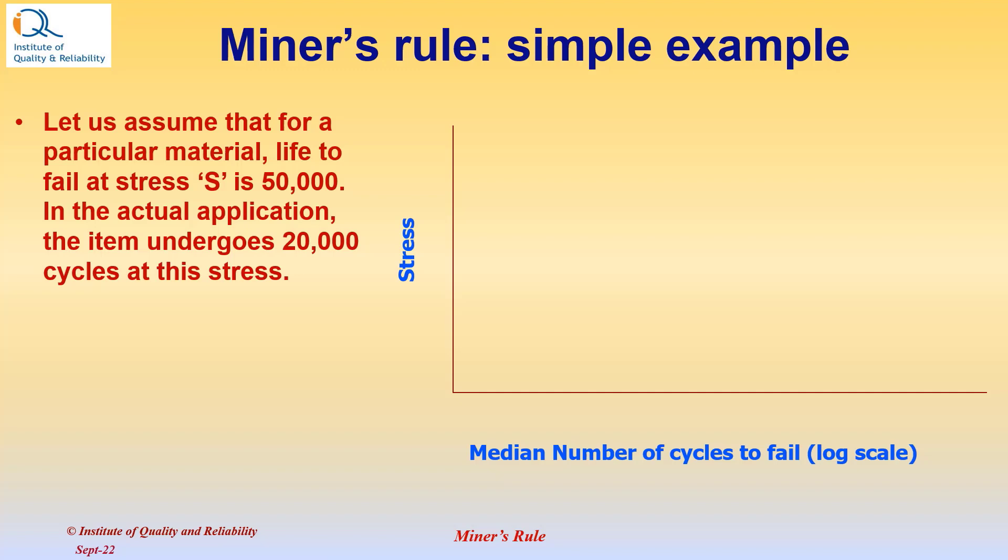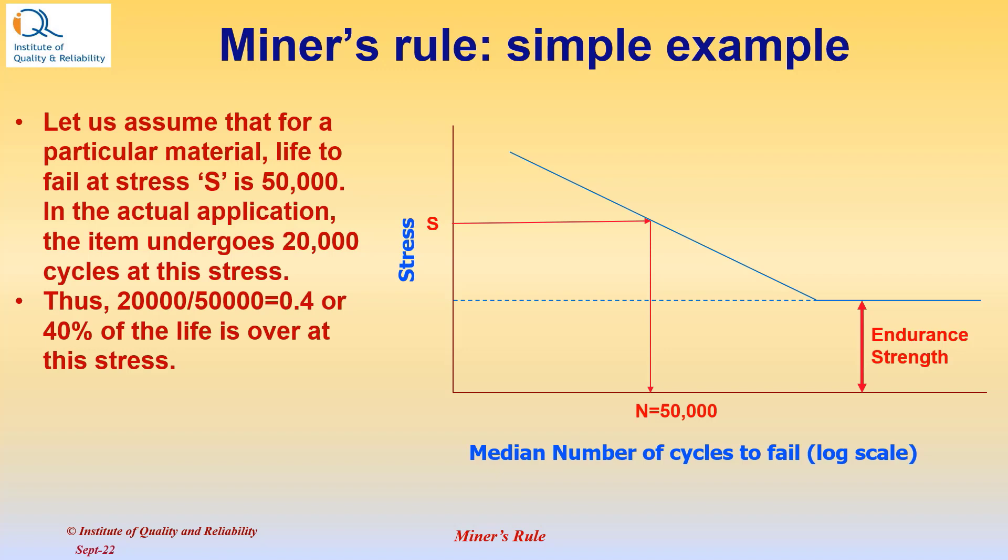Let us consider a simple example. Let us assume that for a particular material, life to fail at stress level S is 50,000 cycles. In the actual application, the item undergoes 20,000 cycles at this stress level. Therefore, 20,000/50,000, that is 0.4 or 40% of the life is over at this stress level.